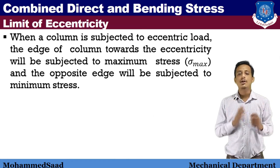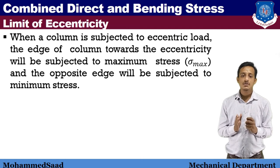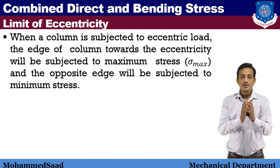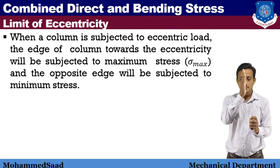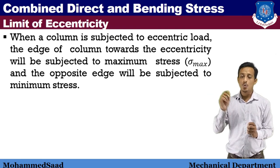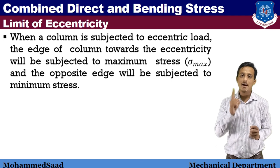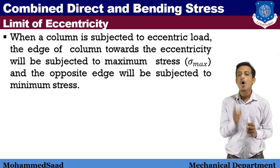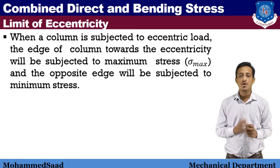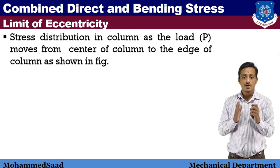When a column is subjected to an eccentric load, the edge of the column towards the eccentricity is subjected to maximum stress, denoted by sigma max. The opposite edge is subjected to minimum stress, sigma min. If an eccentric load is applied to the right, the right edge experiences sigma max and the left edge experiences the lower minimum stress.